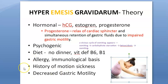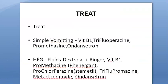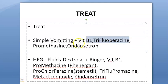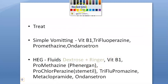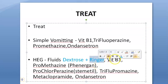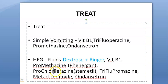Hyperemesis gravidarum happens because of progesterone, estrogen, and hCG — the cardiac sphincter relaxes allowing stomach contents to come up, and impaired gastric motility means everything comes out. Importantly, hyperemesis gravidarum does not affect the fetus. For treatment: if simple vomiting, give vitamin B1 and promethazine or ondansetron. If it is HEG, give fluids — dextrose plus Ringer's — along with electrolytes, vitamin B1, promethazine, prochlorperazine, ondansetron, and metoclopramide.